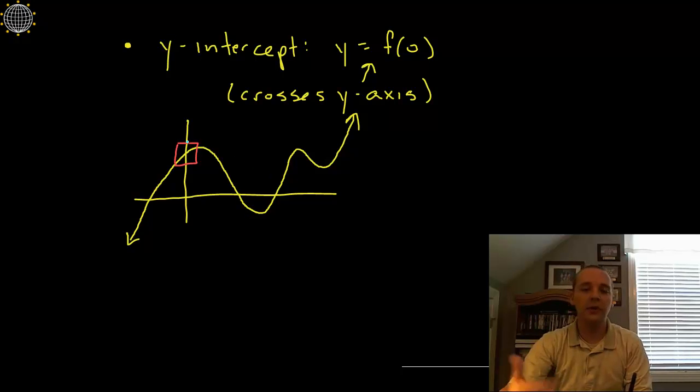The y intercept, for functions you'll only have at most one y intercept, that's the place where it crosses the y axis and to find that we let the x be 0.